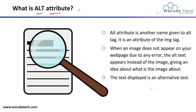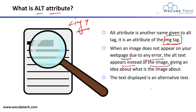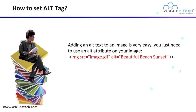What is the alt attribute? This is another name given to the alt tag and it is an attribute of the img tag. We can use the img tag to add an image in your webpage. When an image does not appear on your webpage due to any error, the alt text appears instead of your image, giving you an idea about what that image is about.